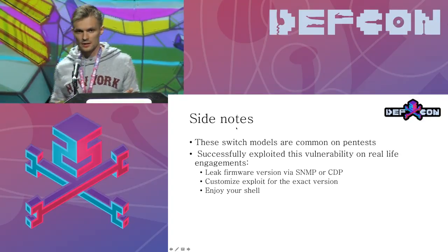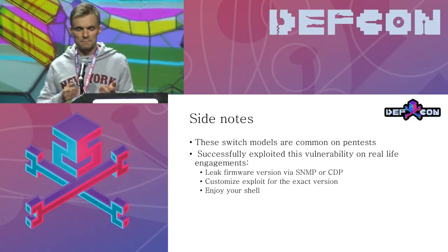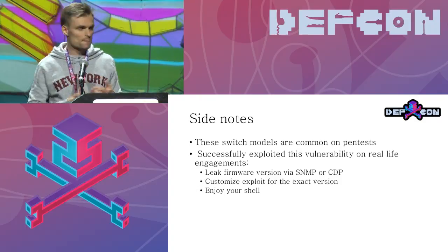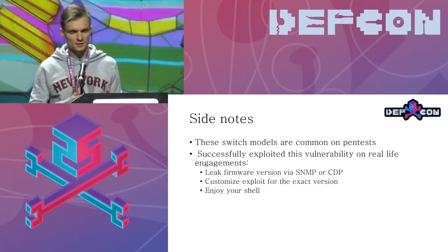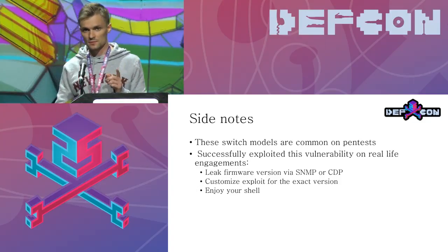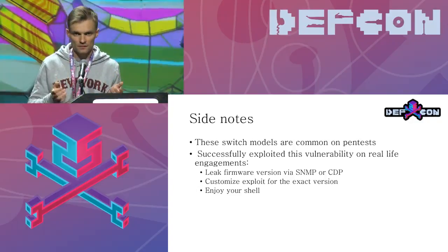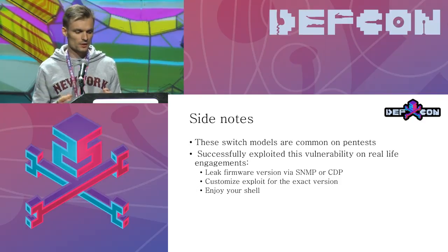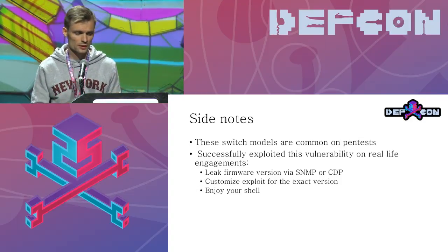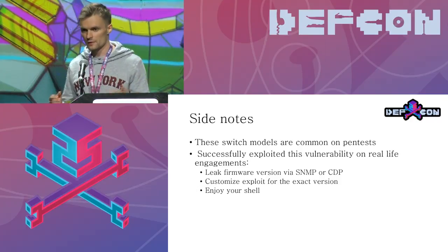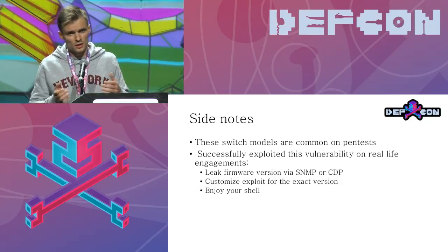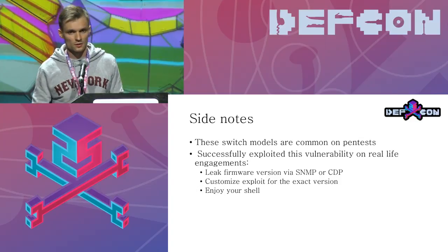Side notes from pen testing: this exploit is firmware-specific because offsets differ between firmware versions. To determine the version, two protocols help: SNMP and CDP. With SNMP, if you have the 'public' or 'private' community string, you can dump the firmware version to customize the exploit. If you're on the same L2 broadcast network, you can listen to CDP packets, which also reveal the switch's firmware version. In about one to two hours you can customize your exploit and get a shell on the switch.